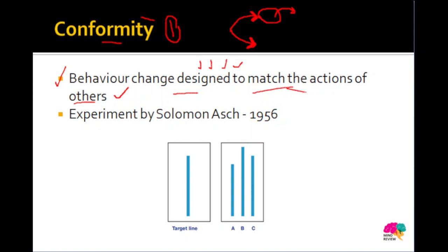One famous experiment on conformity was by Solomon Asch in 1956. I'll explain it briefly because these video lectures are focused on the 'Let's Crack It Entrances' series, so we won't go in depth into the experiment. If you want the experiment in depth, you can go to the social psychology playlist where there is a full 20-minute video dedicated to conformity. In brief, Solomon Asch what he did was — he called some participants.